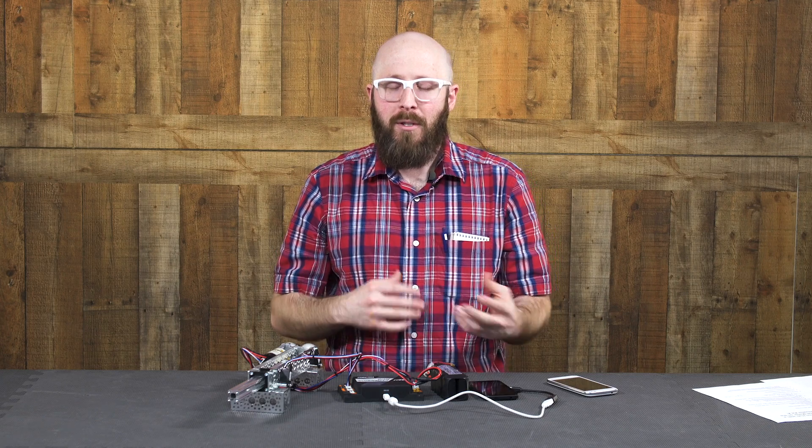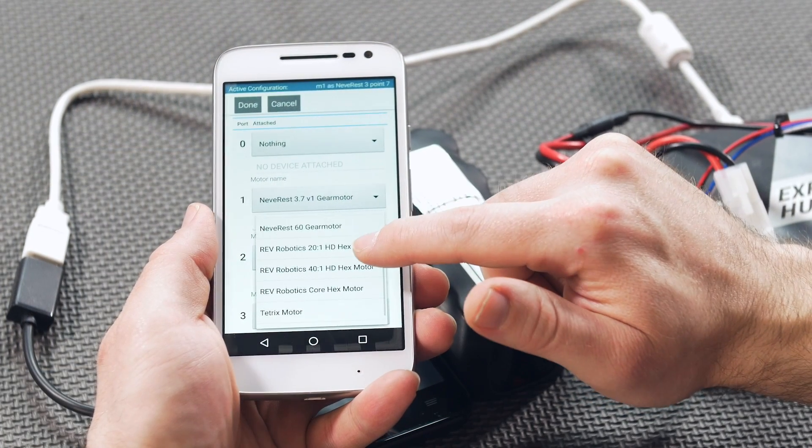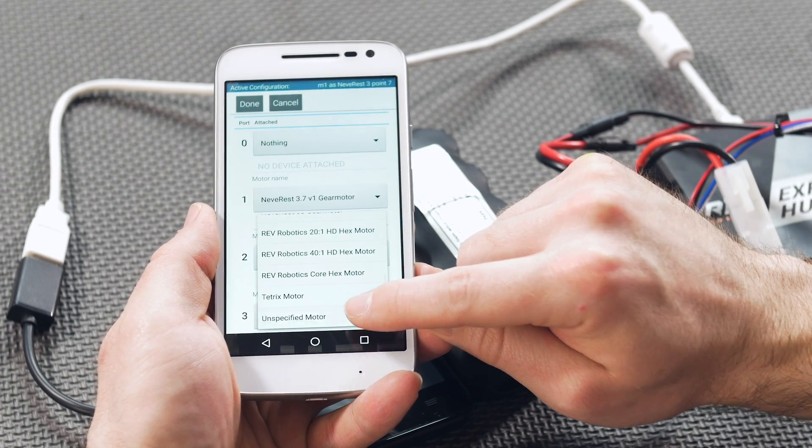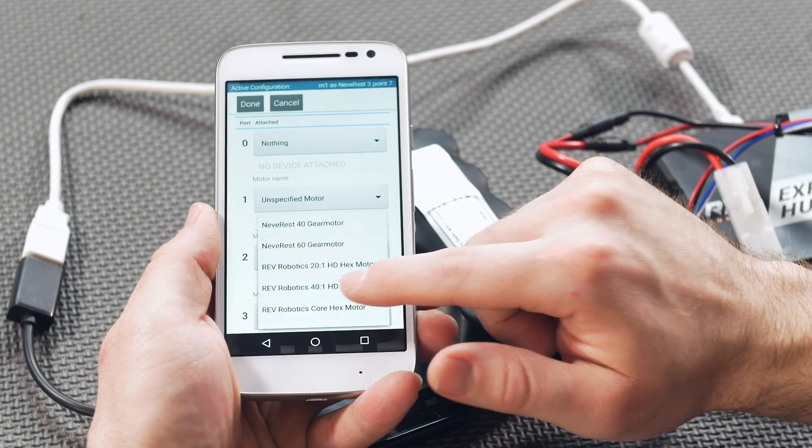So I don't really know for sure because I don't work at Rev, but it does know a lot of things about the motor and it's rolling that into its decision on how to behave when you tell it to do things. So what I would do if I were you is start with unspecified. It's there for a reason. It's there for stuff like this where you have a motor that's not in the list but is legal.